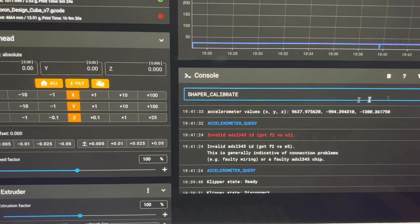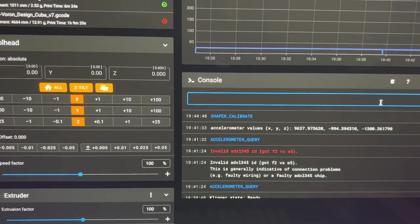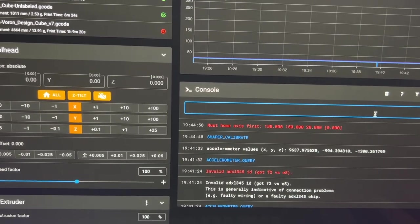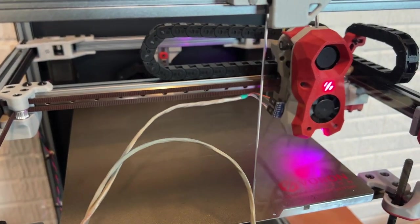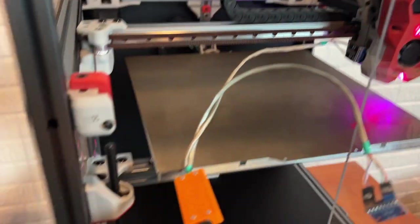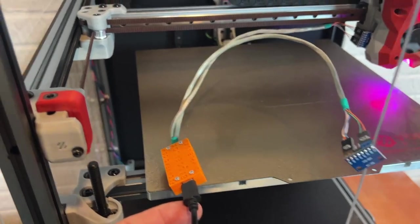And now I'm just going to run shaper calibrate and hit enter. And oh we got a home first. Okay, I'm going ahead and homing it like it asked. I am going to be careful just holding these wires. I don't want anything getting caught too bad.